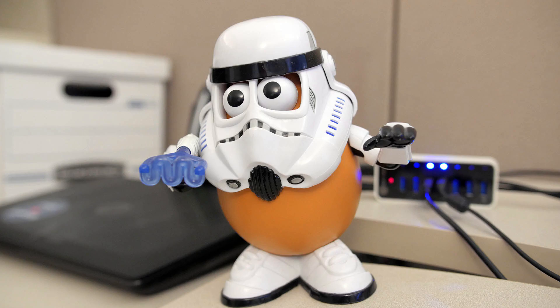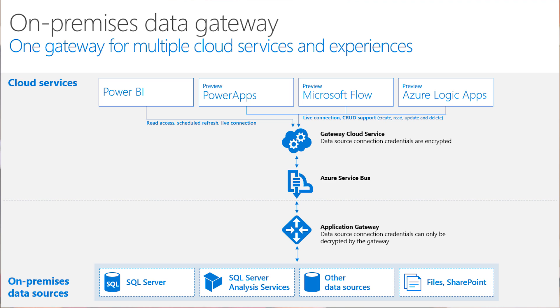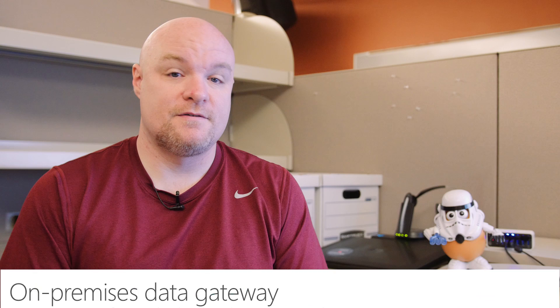Why did it change? The big reason for changing to the on-premises data gateway is that it can now be used with other services outside of Power BI. The services you can use this with are Power Apps, Microsoft Flow, and Logic Apps.